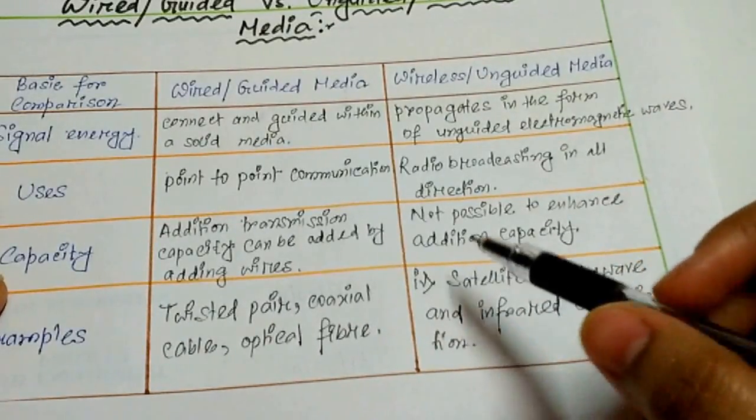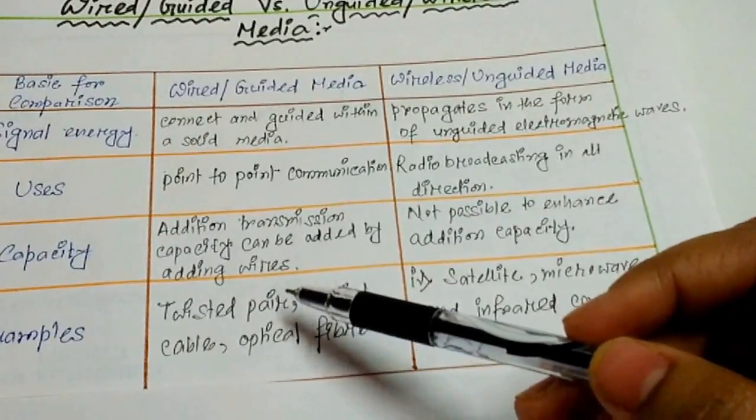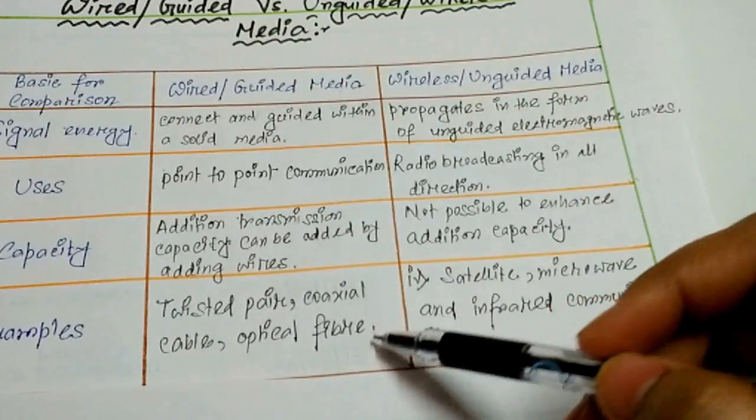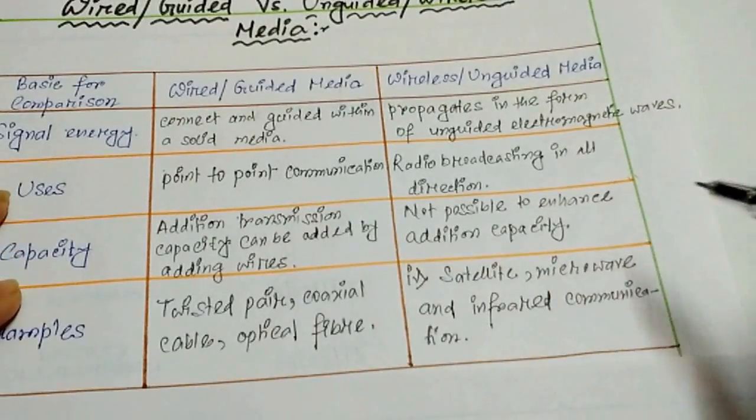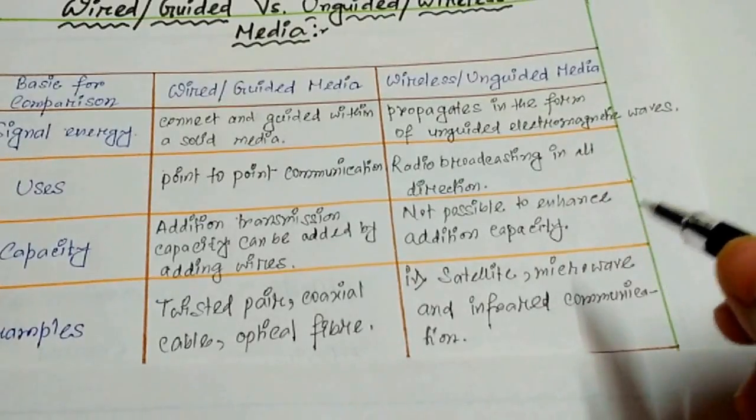I have discussed briefly about twisted pair, coaxial cable, optical fiber, as well as satellite, microwave, and infrared communication in my last videos.